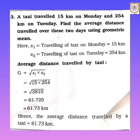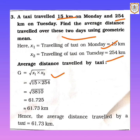Let's read sum number 3. A taxi traveled 15 km on Monday and 254 km on Tuesday. Find the average distance traveled over these two days using geometric mean. There are two observations, 15 km and 254 km, so the geometric mean is the square root of x1 × x2. We multiply 15 × 254 = 3,810. The square root of 3,810 is 61.725, which rounds to 61.73 km. So the average distance traveled by the taxi is 61.73 km.